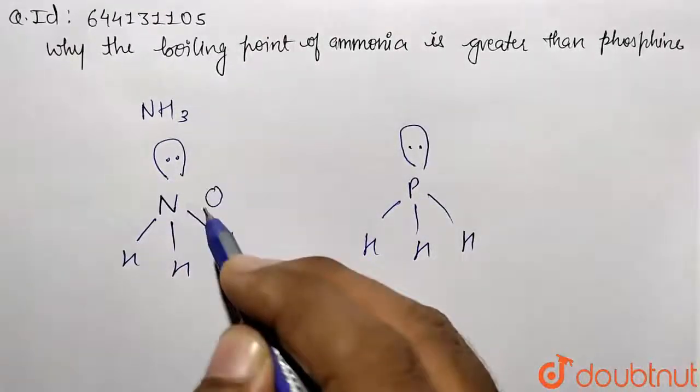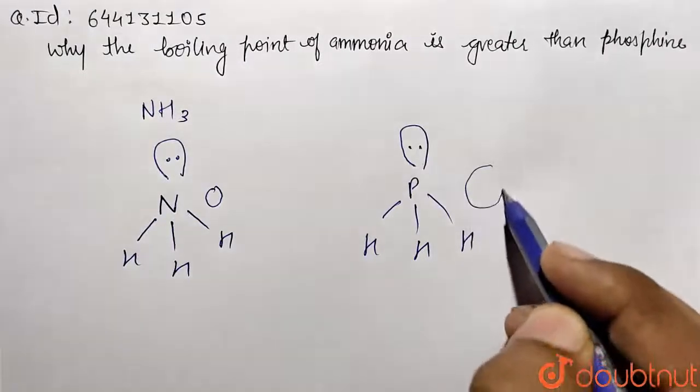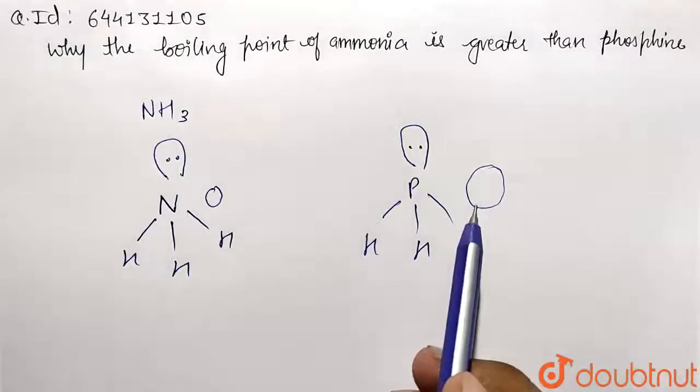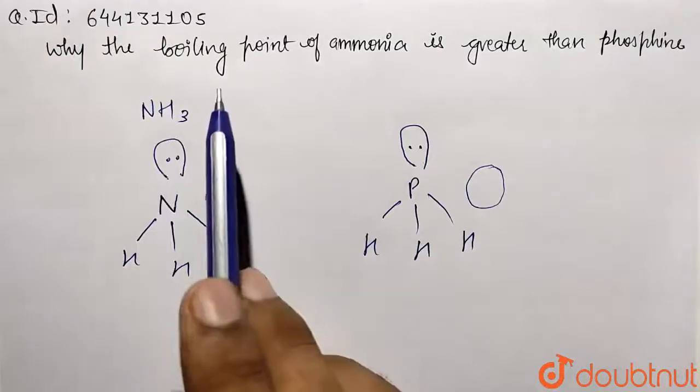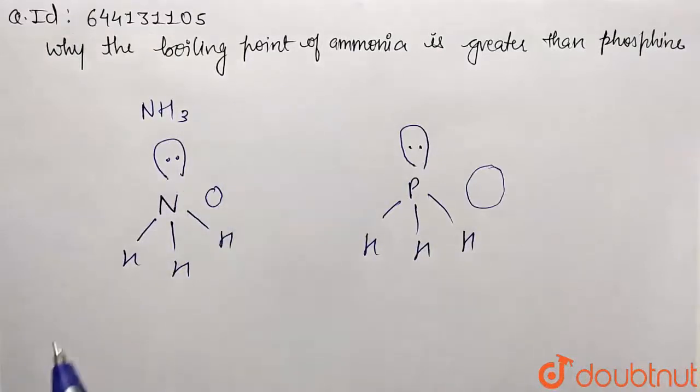The size is smaller of nitrogen as compared to phosphine because they are from different periods, so this is smaller and this is larger. Now they are asking us why the boiling point of ammonia is more.